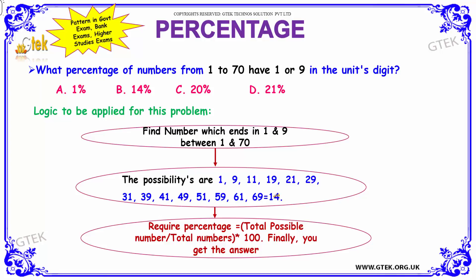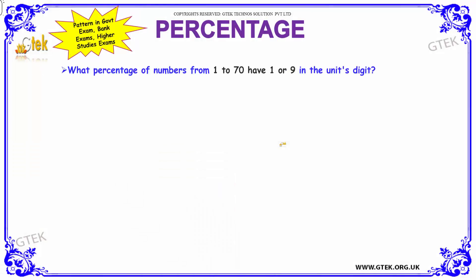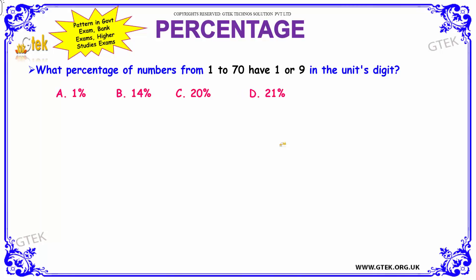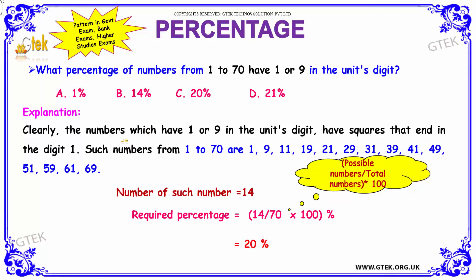So, totally you have 14 numbers. The required percentage can be calculated by total possible numbers divided by total numbers, multiplied by 100. That gives you 14 by 70 into 100, which gives you 20%. Option C.